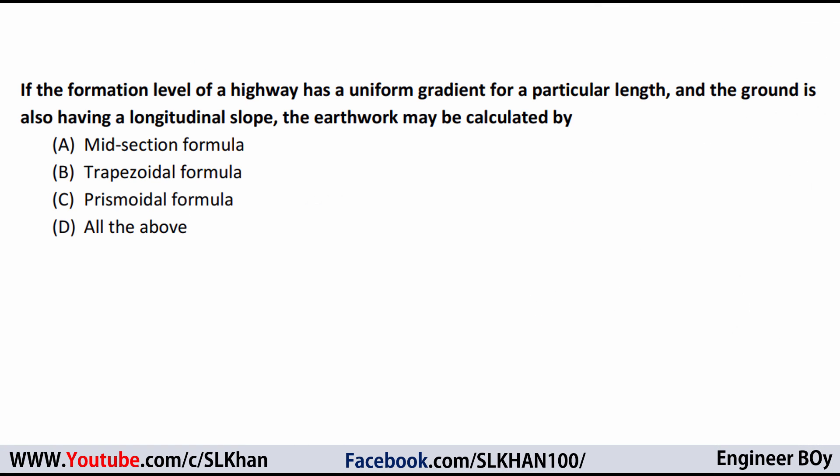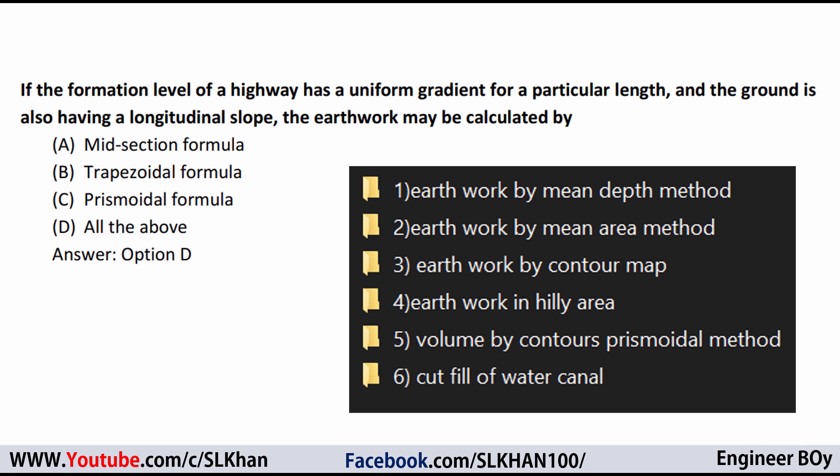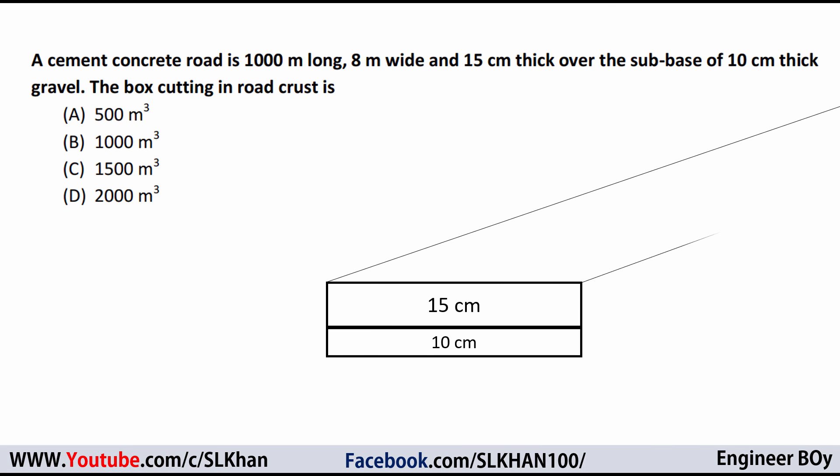Another question: if the formation level of a highway is at a uniform gradient for a particular length and the ground is also having a longitudinal slope, then the earthwork may be calculated by the midsection formula, trapezoidal formula, prismoidal formula, or all of the above. I'm happy with all of the above because all these methods can be used. So I'm happy with option D — all of the above. If you don't know how to use these formulas, I've already uploaded separate videos on earthwork by mean depth method, mean area method, prismoidal, and trapezoidal method — you can watch them on the same channel.